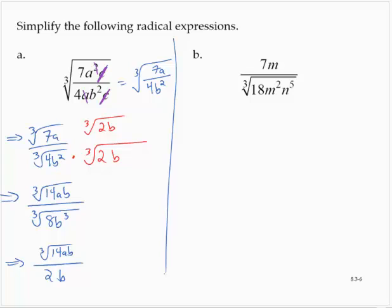7m over the cube root of 18m squared n to the fifth. Now that 18 is tricky to work with. 18 times what gives me a perfect cube? That's tough.